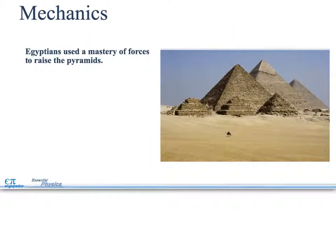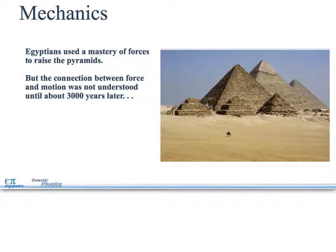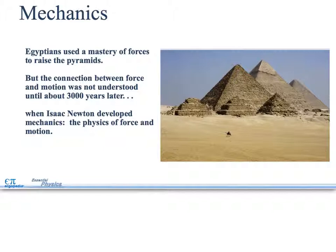When I say motion, I'm talking about mechanics. Mechanics and motion are basically the same thing. Egyptians used a mastery of forces to raise the pyramids, but the connection between force and motion was not understood until 3,000 years later. These pyramids were built using force and motion before they even knew what force and motion was. So they had an understanding of how it worked, they just didn't have a name for it. When Isaac Newton developed mechanics, the physics of force and motion, it was 3,000 years after this. We're going to talk about Isaac Newton a lot in this course.